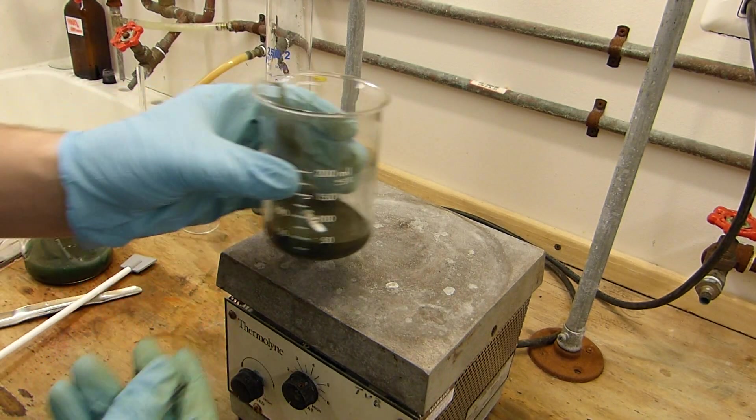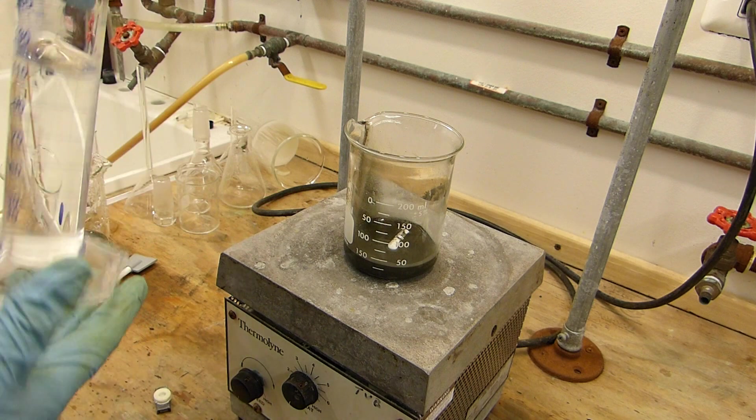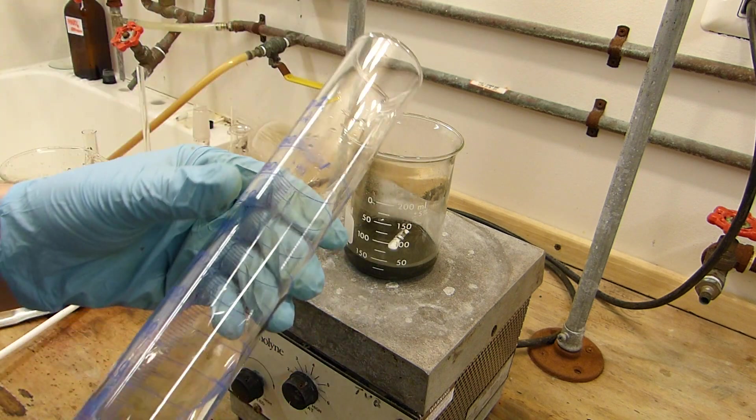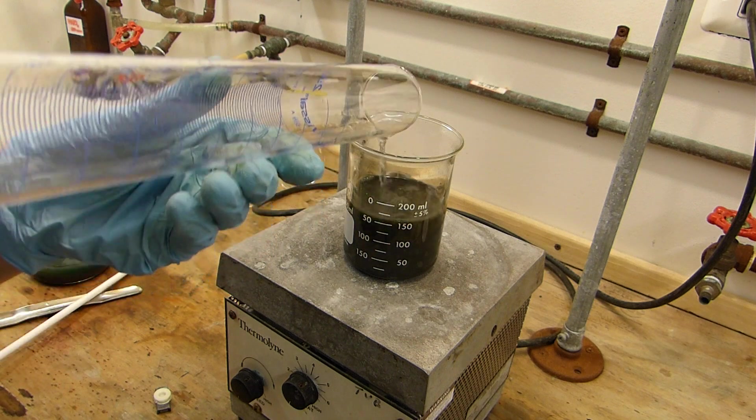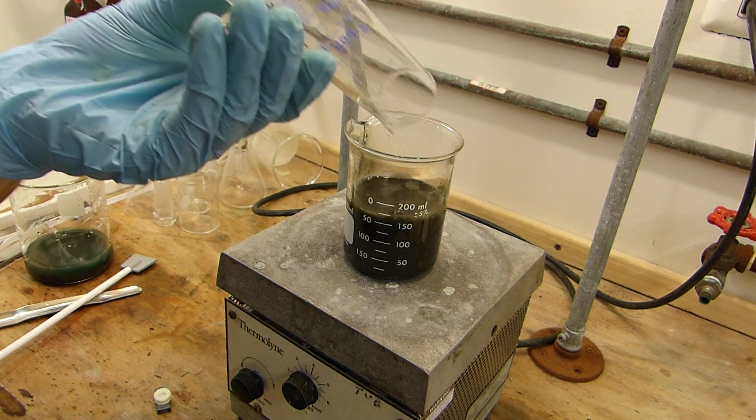So now for the second washing. Again, I've prepared the acetic acid solution. Just pour this in. Stir for 10 minutes and settle for 10 minutes.